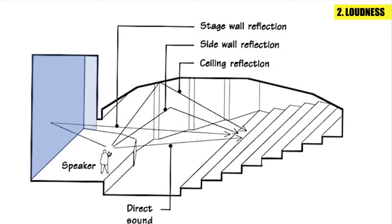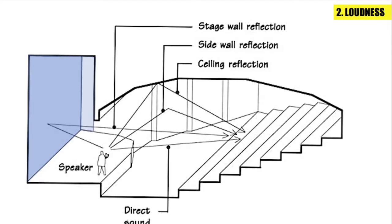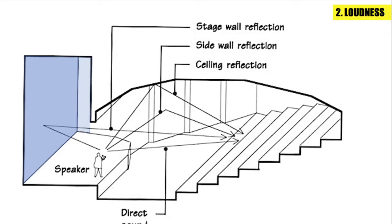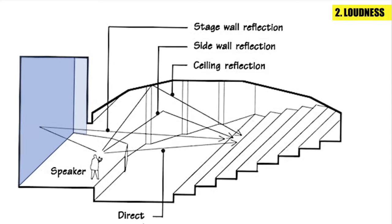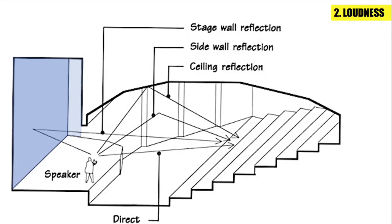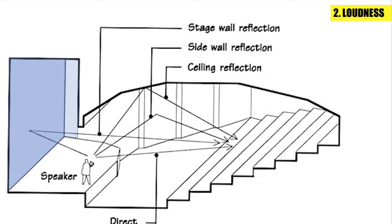Two: loudness. Loudness is a degree of sensation produced on the ear. If the intensity of the sound is weak, loudness may go below the level of audibility. Sufficient loudness in every part of the hall is important for satisfactory hearing.